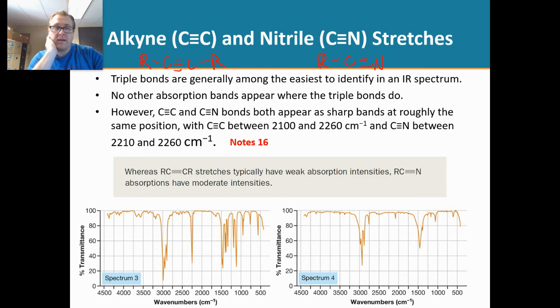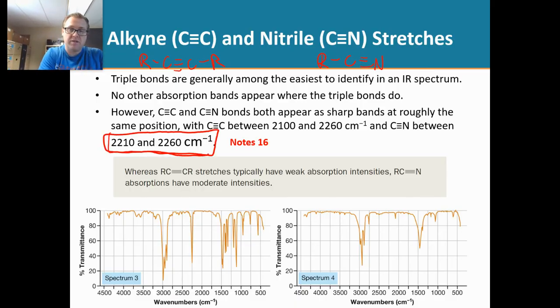Now, these stretches are so easy to identify on an IR spectrum. And the reason why they're so easy to identify is because no other stretches appear in this range. So if you see signal in that range, that's a very sharp peak, then you know with high confidence that you have an alkyne or a nitrile.